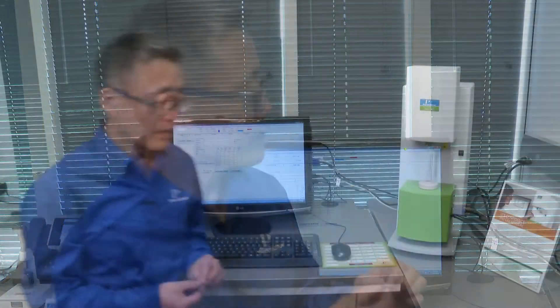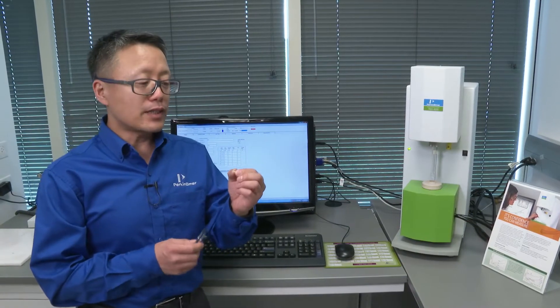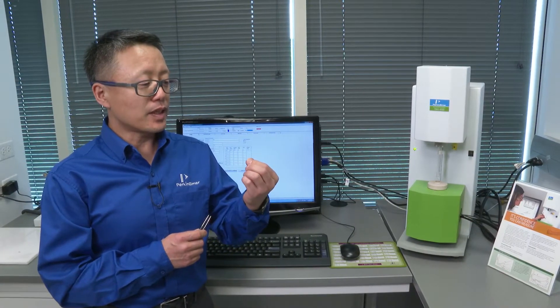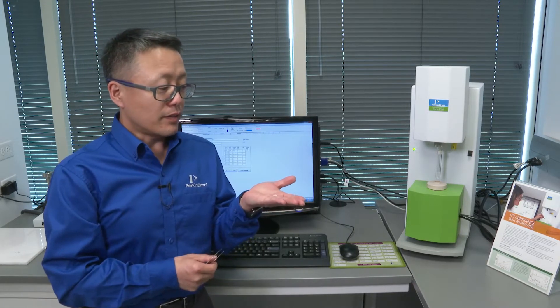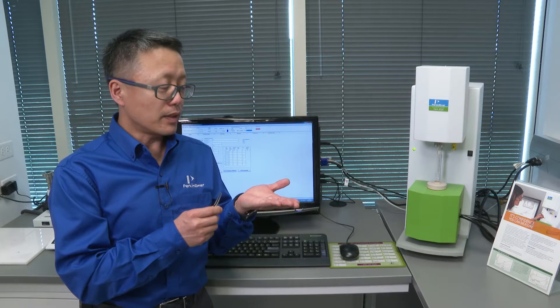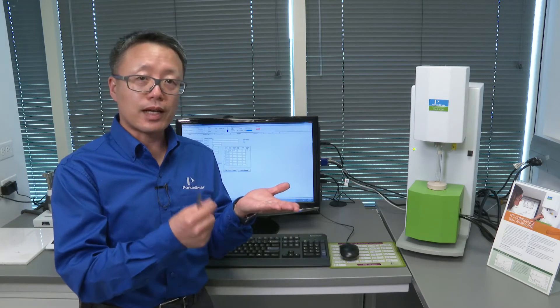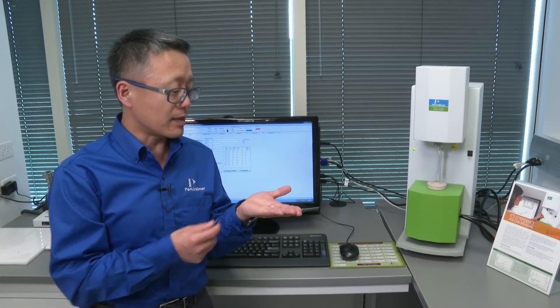I will first show you how to run the Z direction CTE. To measure the Z direction, you have to have a sample laying on its side. If the sample is too thin, you can stack a couple layers up according to your ASTM method.